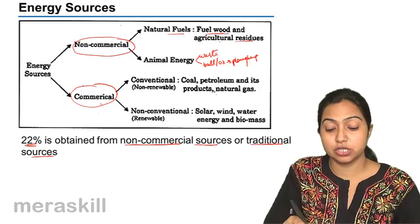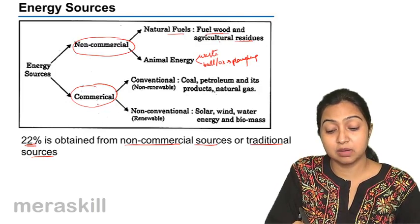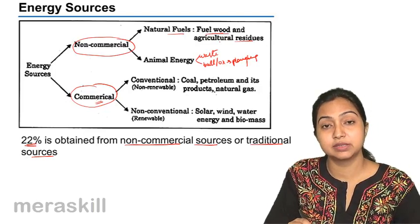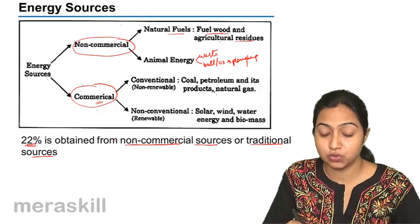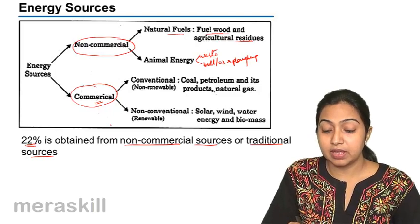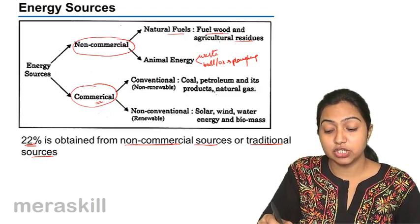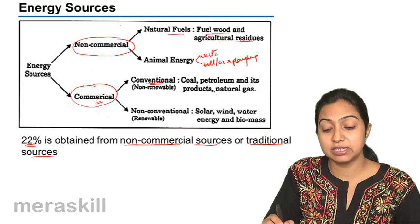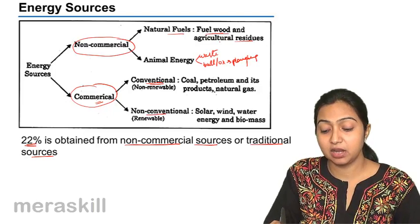The rest of the population uses commercial sources of energy. What is commercial? That is processed and used. Commercial energy is also of two types: there are conventional methods and then there are non-conventional.